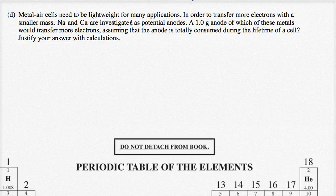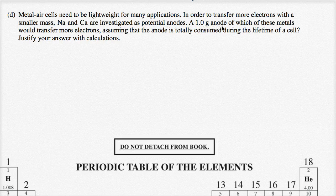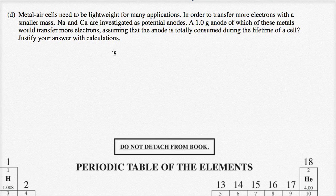Metal-air cells need to be lightweight for many applications. In order to transfer more electrons with a smaller mass, sodium and calcium are investigated as potential anodes. A 1.0 gram anode of which of these metals would transfer more electrons, assuming that the anode is totally consumed during the lifetime of a cell? Justify your answer with calculations.